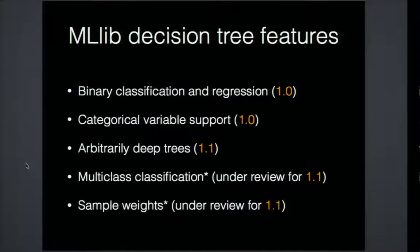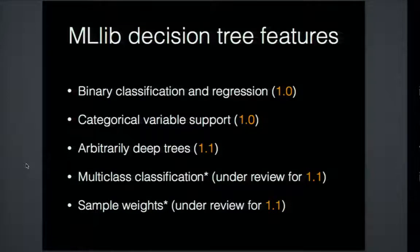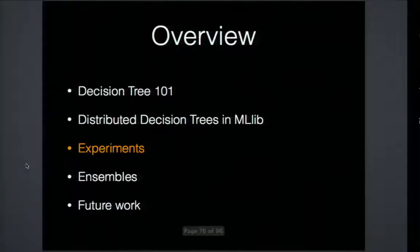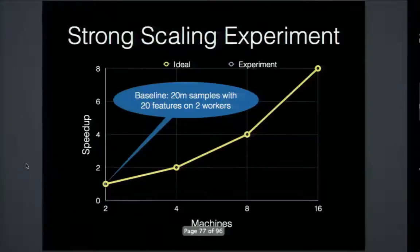Let me talk about what features are available in the Spark MLlib library. Spark 1.0 includes support for binary classification and regression, and also supports categorical variables. Spark 1.1 — expected out next month — will support arbitrary-depth trees. There is also a pull request under review for multi-class classification, as well as sample weights for unbalanced data sets.